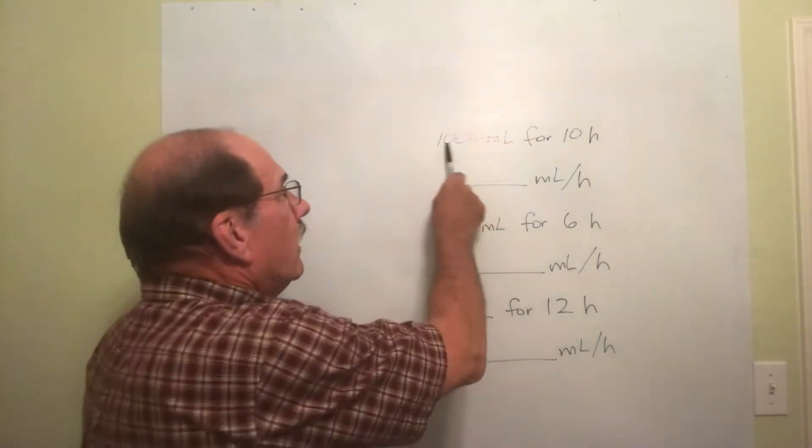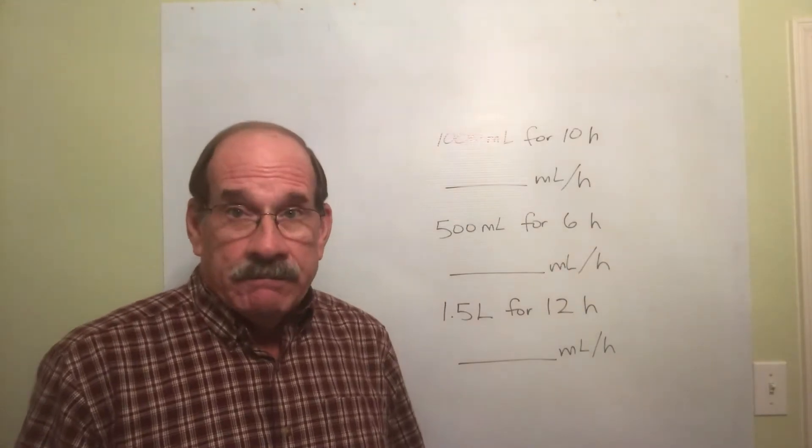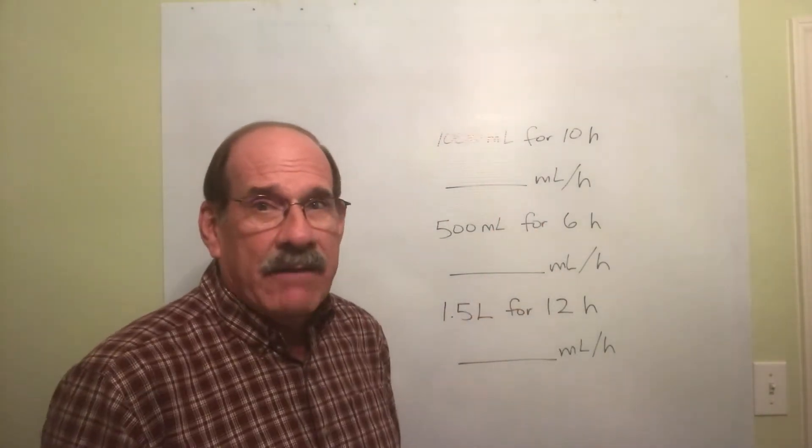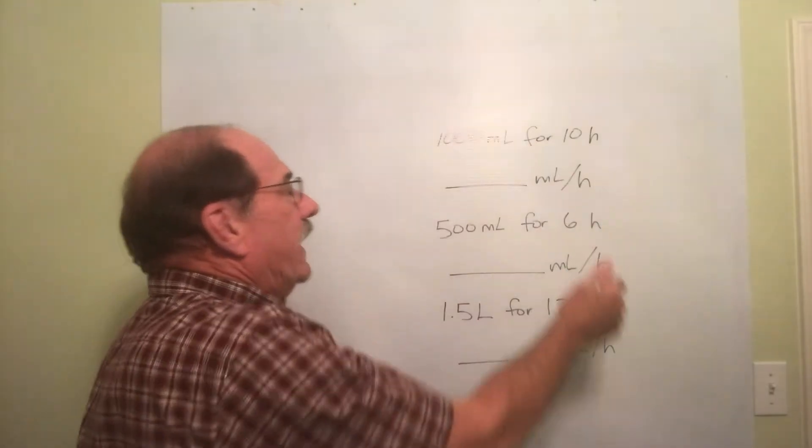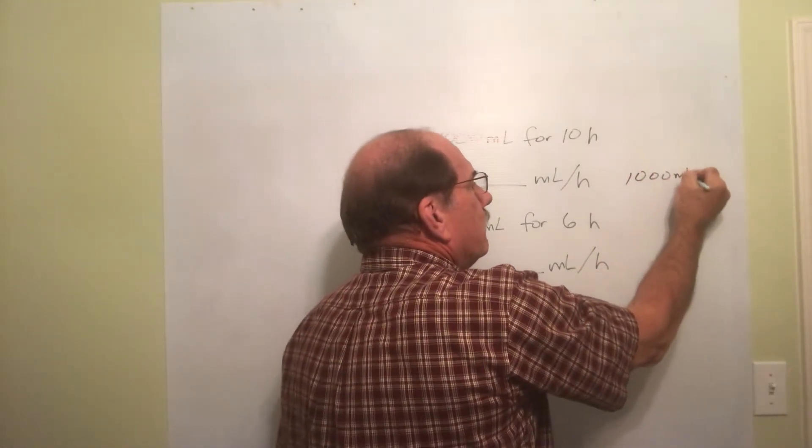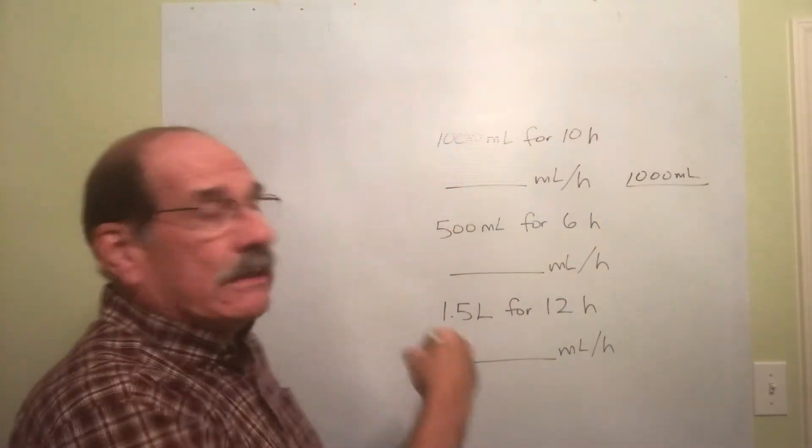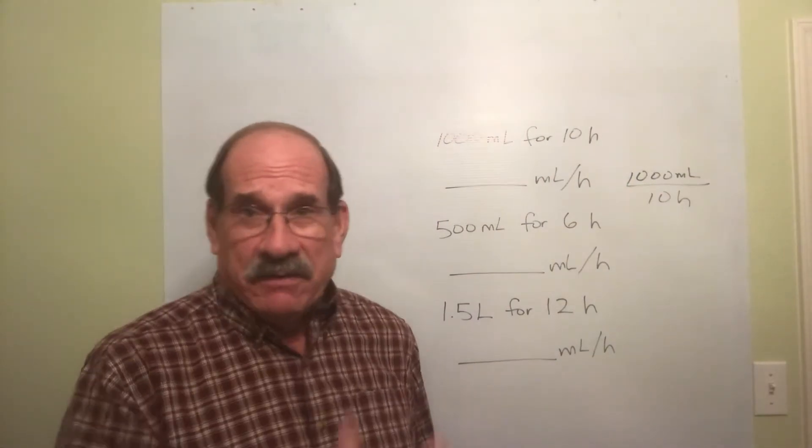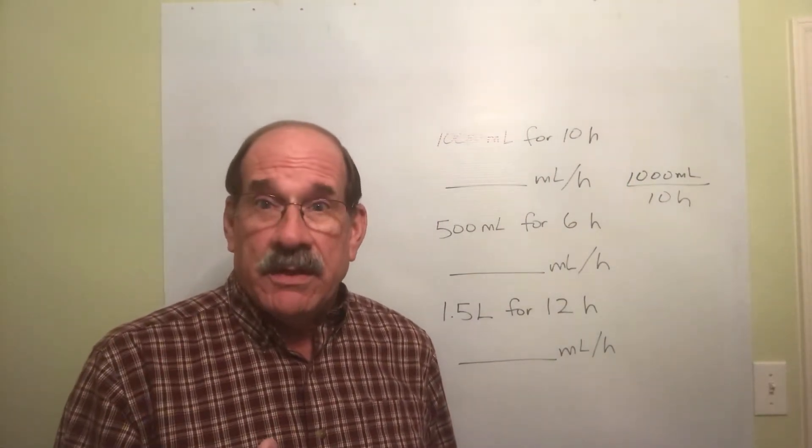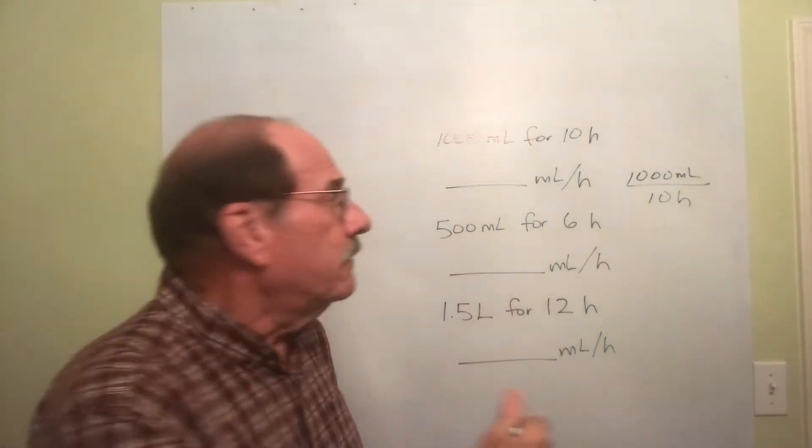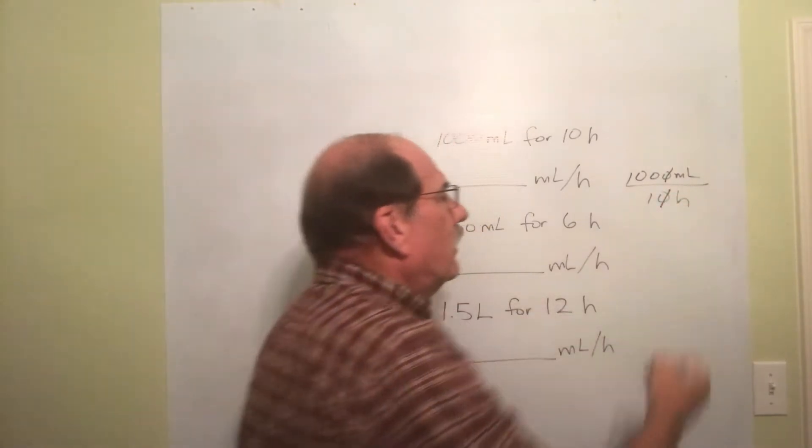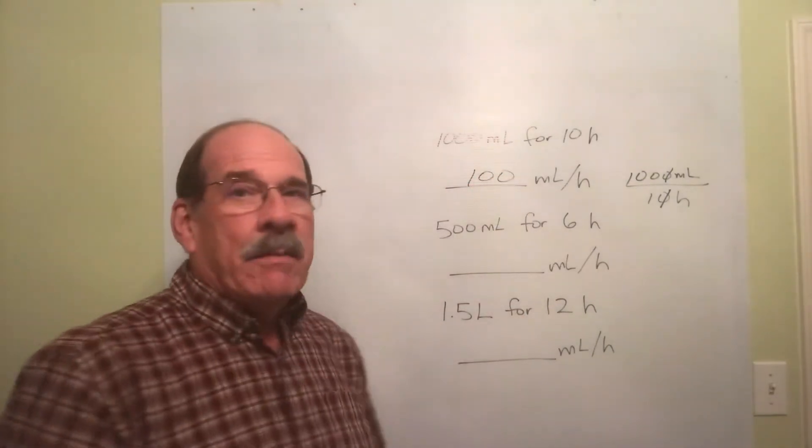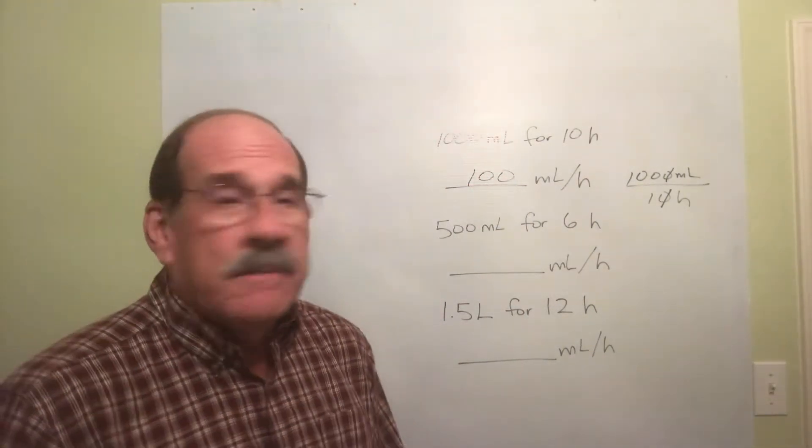Let's say you're supposed to give 1000 milliliters of some kind of IV fluid and you're supposed to give it for 10 hours. We need to find out milliliters per hour. Of course, per means divided by. I take 1000 milliliters and I divide it by the number of hours, 10. Well, my goodness, you shouldn't even need your calculator for that. You can use this canceling zero thing - this zero here cancels that zero, and what's the answer? 100. I'm going to punch into my machine the number 100.